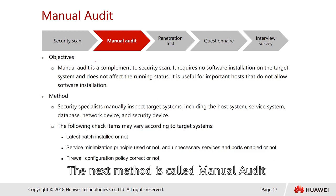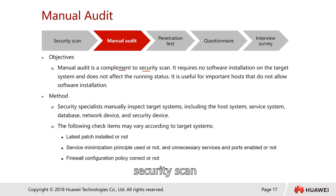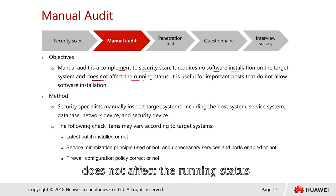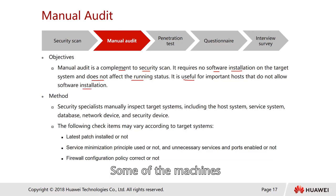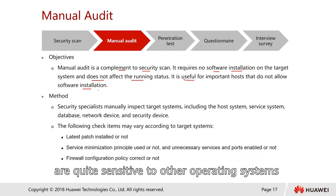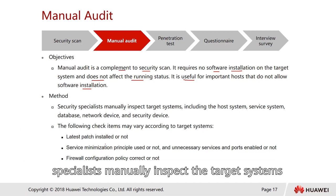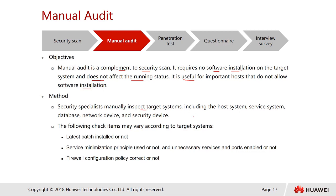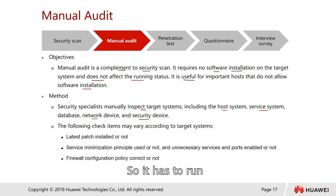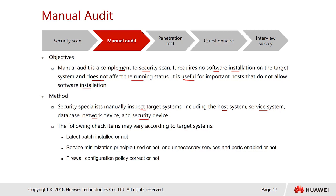The next method is manual audit, which is a complement to security scan. It requires no software installation on the target system and does not affect the running status, making it useful for important hosts that don't allow software installation. The method involves a security specialist manually inspecting the target system, including host systems, service systems, databases, network devices, and security devices.